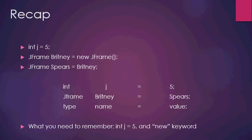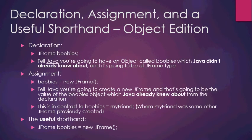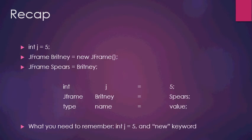Let's look at the two statements we've covered. We have 'int j = 5' — by the way, I changed i to j because PowerPoint keeps auto-correcting lowercase i to uppercase I. We also have 'JFrame Brittany = new JFrame()' or 'JFrame Spears = Brittany'. So: type, name, equals, value. 'int j = 5' is type name equals value. 'JFrame Brittany = Spears' is the same — type, name, equals, value. They all work the same way.